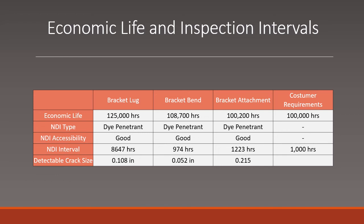From the DTA analysis, it's clear that the bracket lug is the least critical failure critical location because it surpasses the economic life requirement and NDI interval requirement. While the bracket attachment FCL surpasses the NDI interval requirement, it barely meets the economic life requirement. The major concern is the second failure critical location, the bracket bend. The analysis shows that this part will require an NDI inspection of 974 hours. In order to try to meet this 1,000 hour inspection interval requirement, it is possible that a different NDI method that requires longer inspection intervals can be chosen. Otherwise, resizing of the bracket at that location could be necessary.